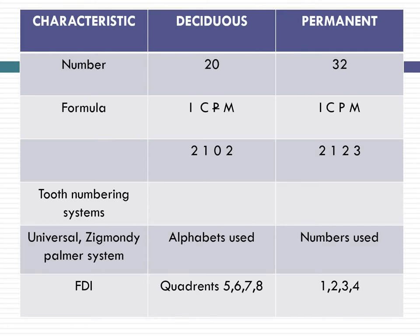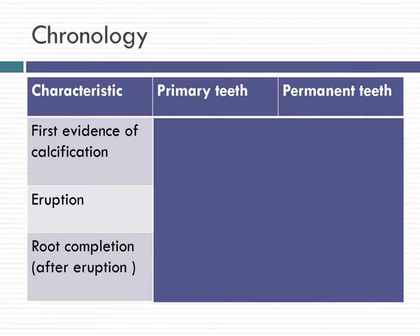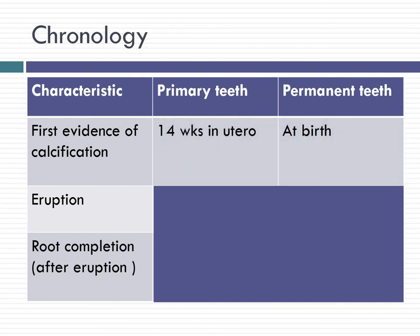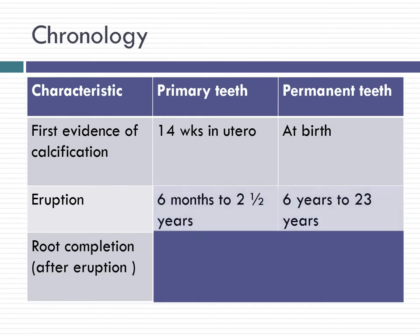In the FDI system, the quadrants are numbered 5, 6, 7, 8 for deciduous and 1, 2, 3, 4 for permanent teeth. Chronologically, the primary teeth develop much earlier — at 14 weeks in utero. The only permanent tooth that tends to form before or at birth is the permanent first molar. Eruption of primary teeth starts from 6 months and completes by 2.5 years, whereas permanent teeth start at 6 years and the third molar can form up to 23 years of age.